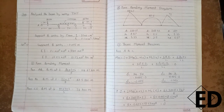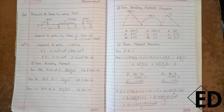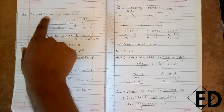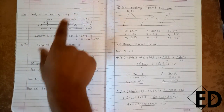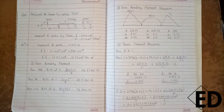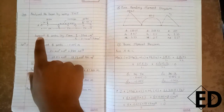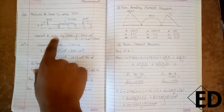We are going to solve a type number four question on the three moment theorem. This is a question on sinking of support. The question asks to analyze the beam using the three moment theorem, with support B sinking by a given amount.